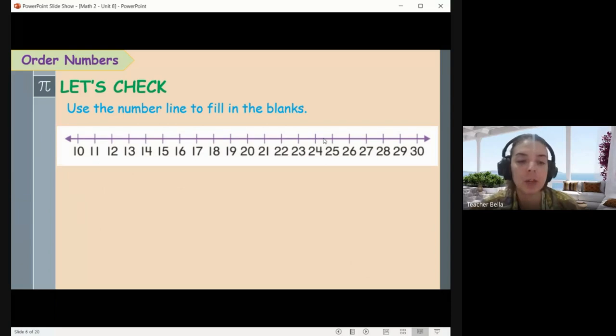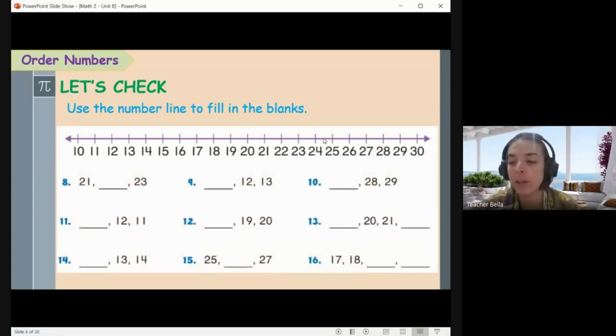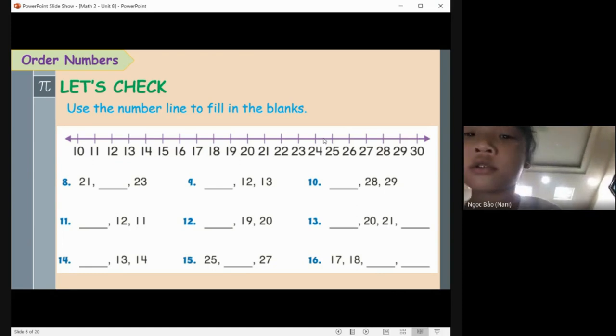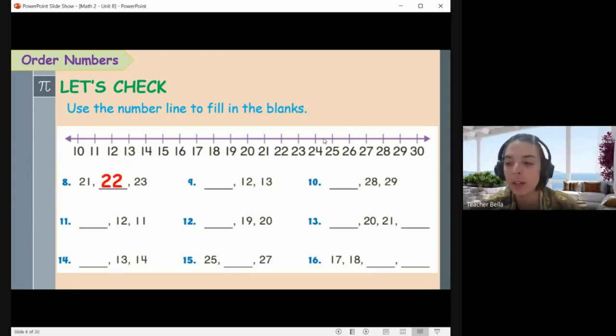All right, very good job. Now we have a number line with a few more numbers. Nani, can you help with number eight? 22. Yeah, so 21, 22, 23. Very, very good, well done.